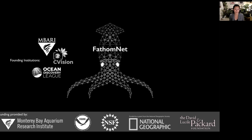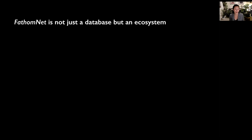FathomNet also contains data from NOAA's Office of Exploration and Research and National Geographic Society, with many more contributions forthcoming, as we only announced our beta launch less than two weeks ago. Our vision for FathomNet is that it's not just a database, but an ecosystem of services and resources that anyone can use.